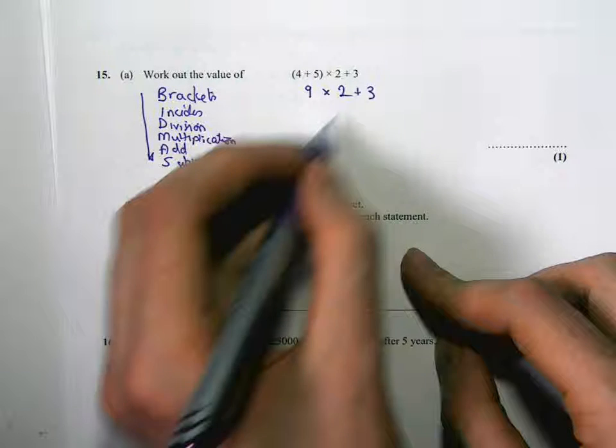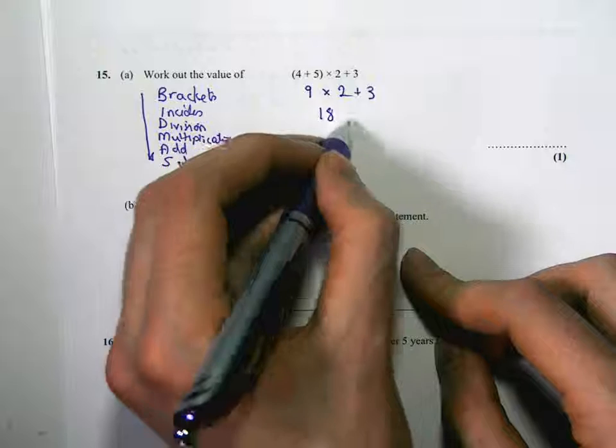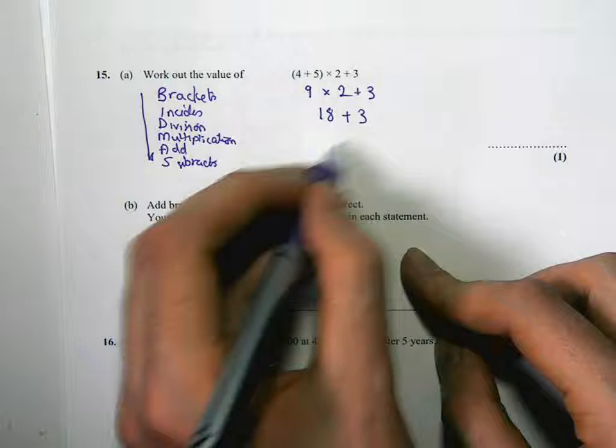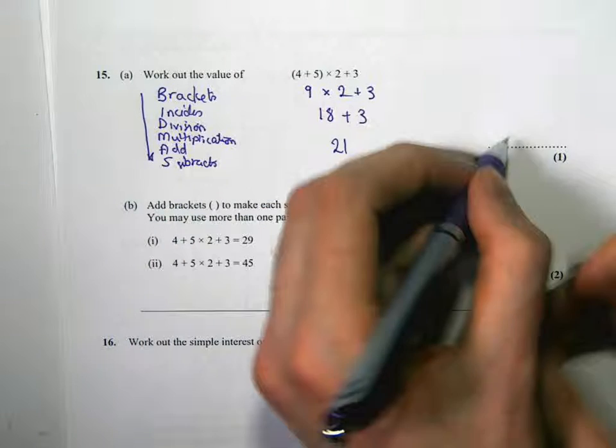So multiplication. So do 9 times 2. That's 18. Still got the add 3 on the end. Add 3. That's least important here. So 18 plus 3 is 21. So our answer here is 21.